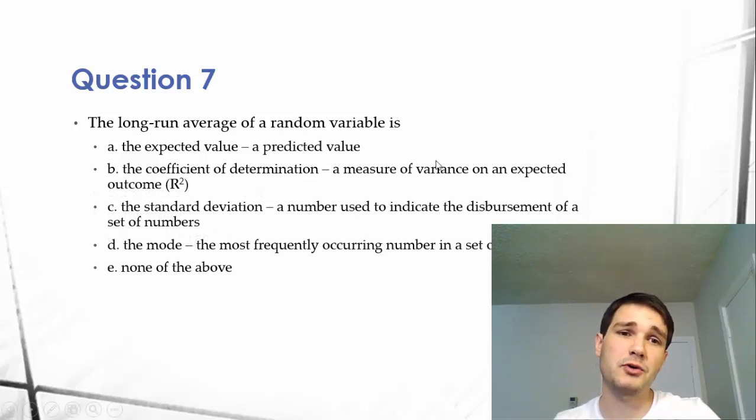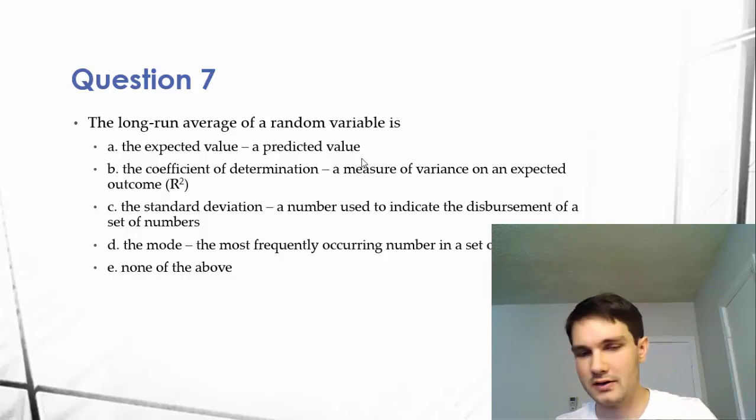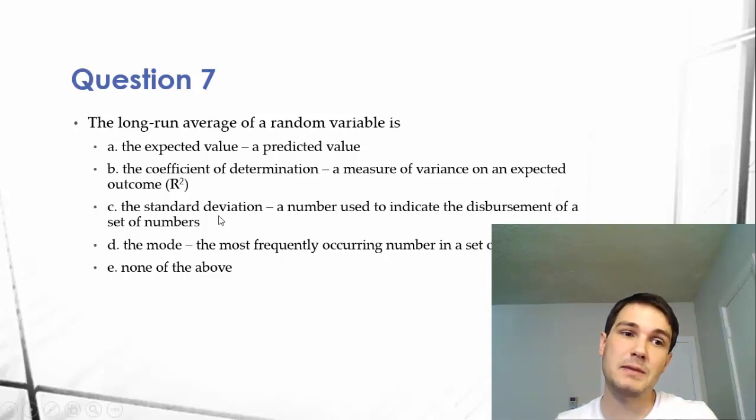An expected value is a predicted value. I'm going to cover how to find a predicted value or the expected value in the next slide. B, the coefficient of determination, is just a measure of variance on an expected outcome. We see this by R square.